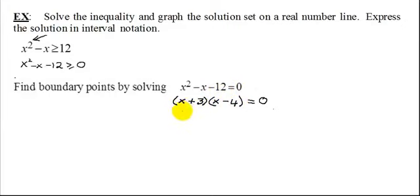So now I have it factored. Remember you set each factor equal to 0. And then solve these little equations, x equals negative 3 and x equals 4. So these are my boundary points.